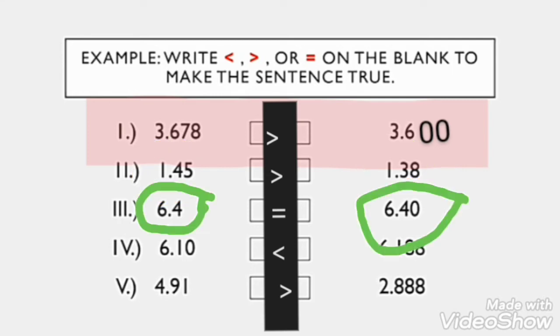For number 3, 6.4 is equal to 6.40. The answer with this problem is equal because if we are going to add another zero to the first number, it will become 6.40.